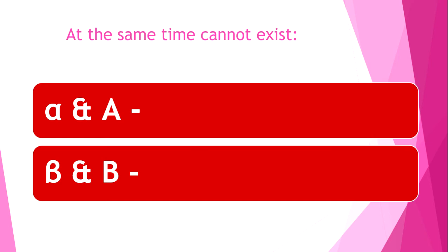You must remember that alpha and A cannot exist together at the same time, and beta and B cannot exist together. So if you connect different blood types containing these incompatible particles, you will see a reaction of hemagglutination, and you could harm or even kill the patient if you transfuse incompatible blood.